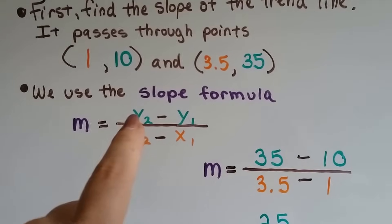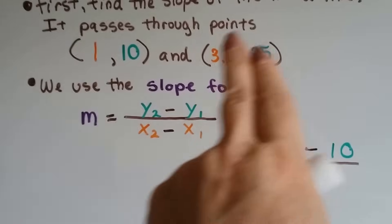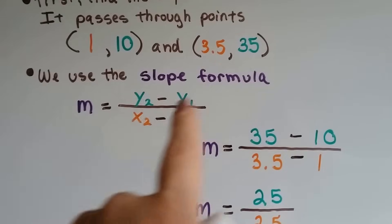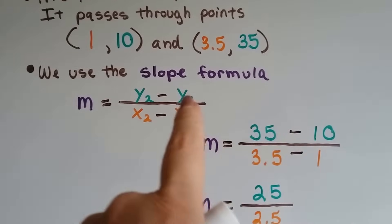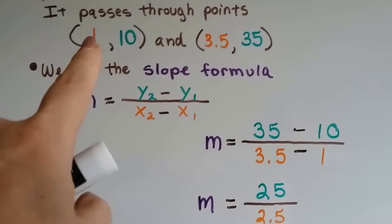So, what we do is we take the second y value. That's this one. See? Here's the first values. Here's the second values. The orange are the x's and the greens are the y. So, y2 would be the 35. y1 would be the 10. x2 would be 3.5 and x1 would be the 1.